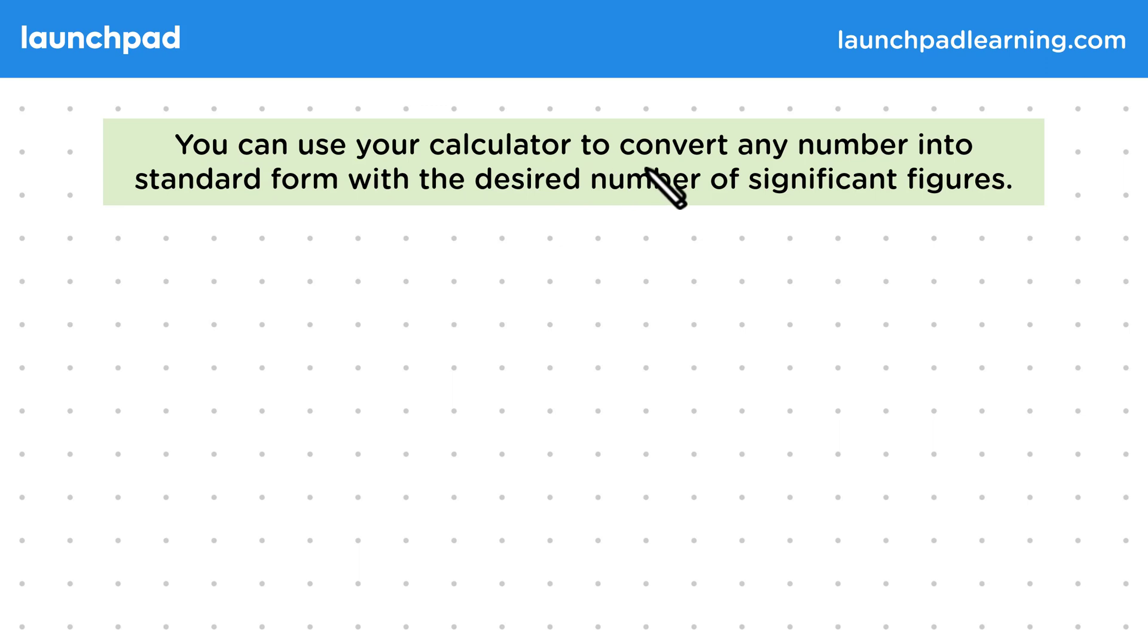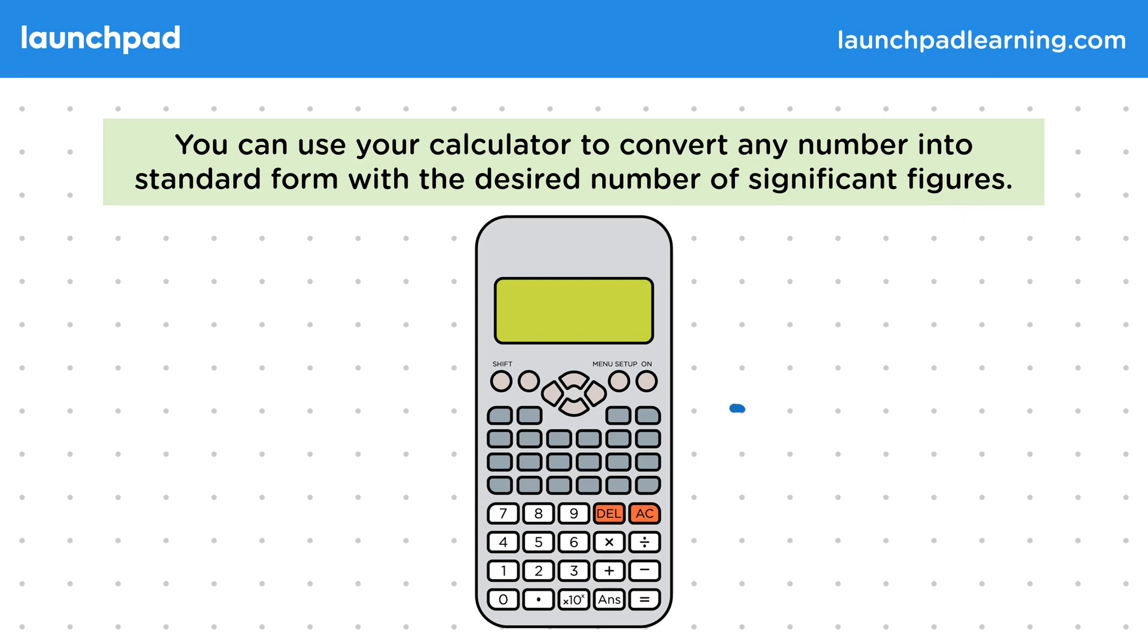You can use your calculator to convert any number into standard form with the desired number of significant figures. You can do this using a scientific calculator. This will be useful because exam questions will often ask you to put your answers in standard form. So what are the steps to do this?